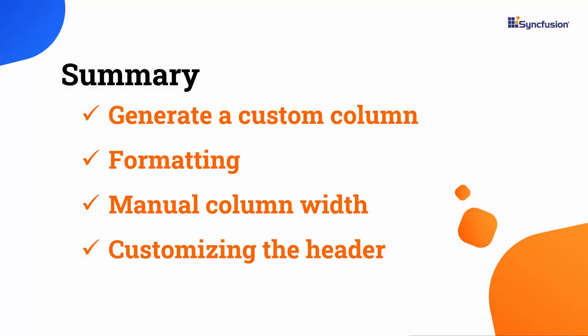In this video, you have learned how to generate different column types in DataGrid, incorporating common features such as column hiding, manual width adjustment, formatting, text alignment, padding, and header customization. You can download a working example from the GitHub link provided in the video's description. I have also included a link in the description where you can check if you qualify for our community license, which gives you a free license key for our entire .NET MAUI control suite. If you found this video useful, don't forget to click the like button and subscribe to our channel to watch more videos like this. Thanks for watching.